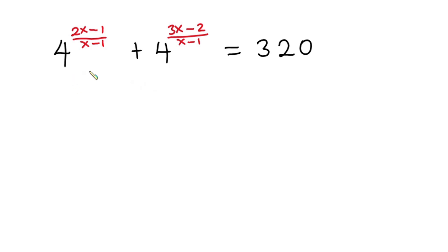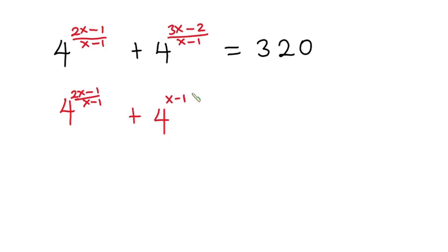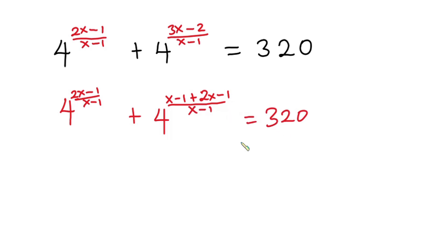The first thing I'm going to do is break this equation down. So we have 4 to the power (2x minus 1) all over (x minus 1), then plus 4 to the power — now this 3x minus 2 could also be written as (x minus 1) plus (2x minus 1). And this whole thing is divided by (x minus 1), and this is equal to 320.